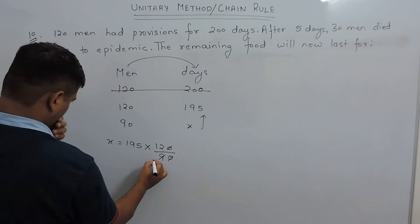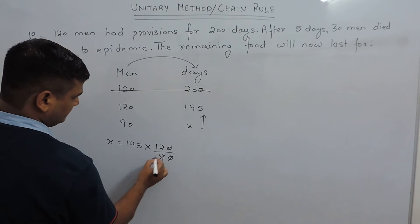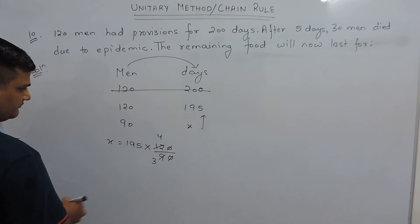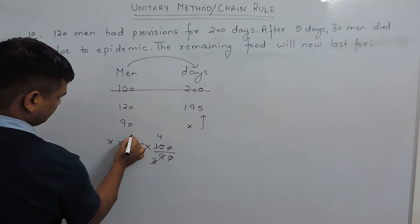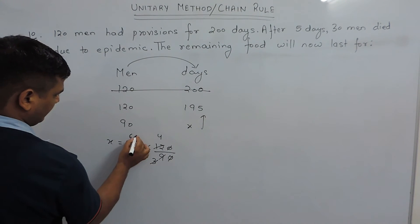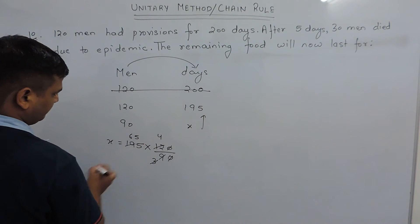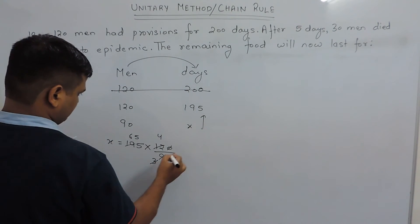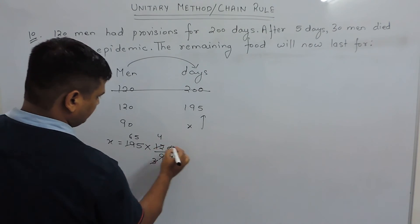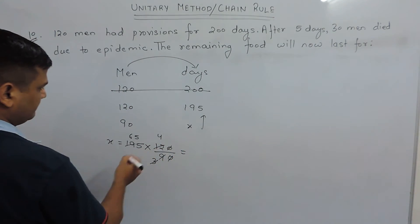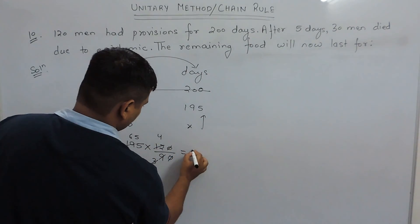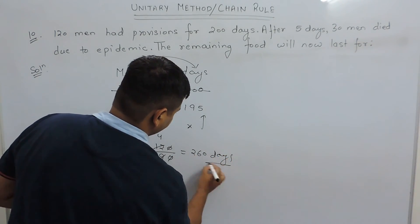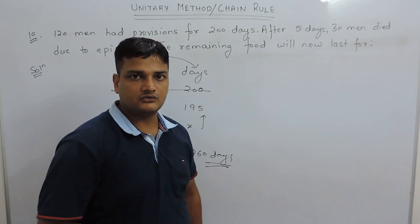After cancellation — 120 divided by 90 simplifies to 4 by 3. So x equals 195 multiplied by 4 by 3, which gives 65 multiplied by 4, equal to 260 days. Thank you.